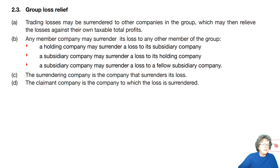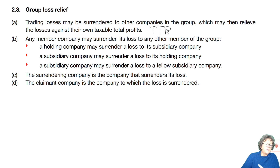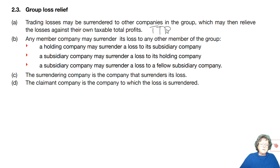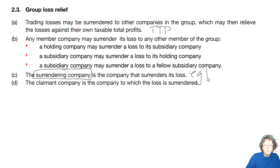So how does group relief work? Trade losses may be surrendered to other companies in a group, which may then relieve that loss against their total taxable profits (TTP). Any member company may surrender its loss to other members of the group — a holding company can surrender its loss to a subsidiary, a subsidiary may surrender its loss up to the holding company, and a subsidiary may surrender its loss to another subsidiary. It's very flexible. The surrendering company is Z and the claimant companies were either A or B.